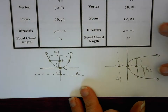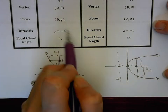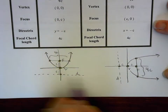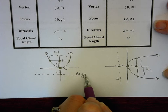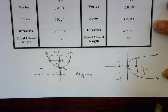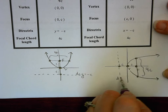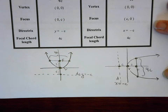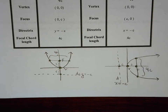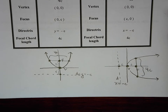The directrix for a vertical parabola crosses the y-axis at y equals negative c. For a horizontal parabola, the directrix crosses the x-axis at x equals negative c. Those are our basic ideas — very similar to what we've already studied; we just need our brains to switch to thinking sideways. Let's look at some examples.